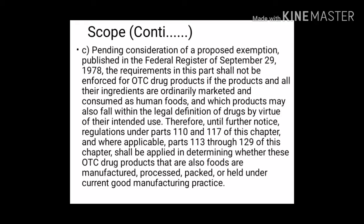Pending consideration of a proposed exemption published in the Federal Register of September 29th, 1978, the requirements in this part shall not be enforced for OTC drug products if the products and all their ingredients are ordinarily marketed and consumed as human foods. Until further notice, regulations under Parts 110 and 117, and where applicable Parts 113 through 129, shall be applied in determining whether these OTC drug products that are also foods are manufactured, processed, packed, or held under current good manufacturing practice.